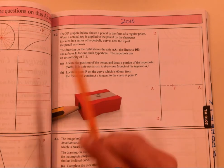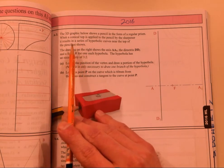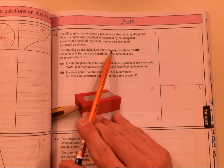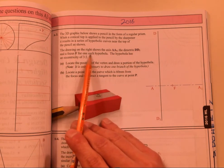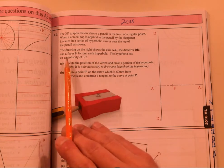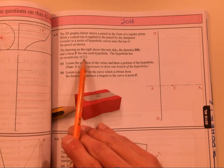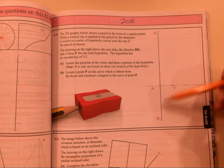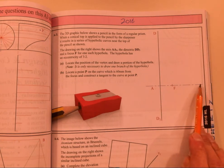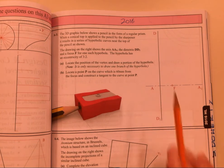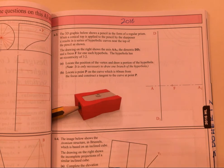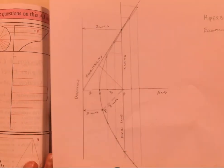The 2016 question, so it's to do with a pencil sharpener. The drawing on the right shows the axis AA1 and directrix DD1 and the focus for a hyperbola. The hyperbola has an eccentricity of three is to two, so that's going to be very important. So we've got a directrix, we've got our axis, we've got our focus. We are missing our eccentricity line and we're missing our vertex.